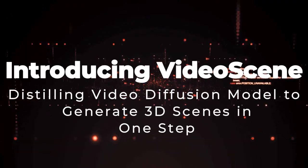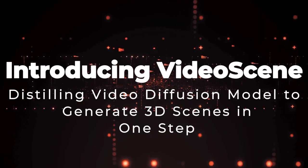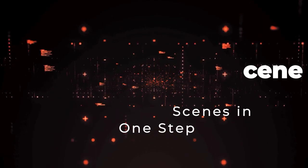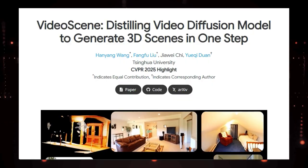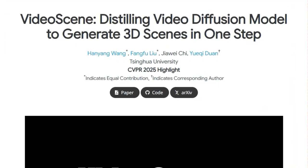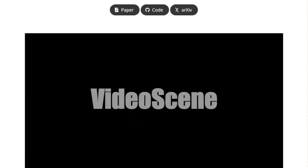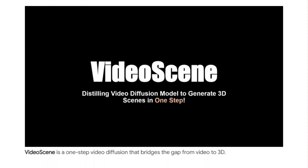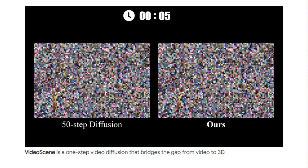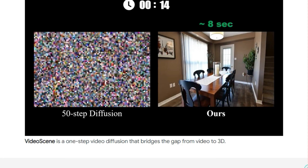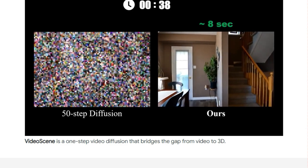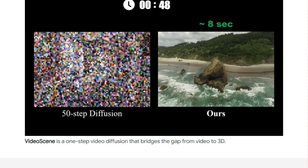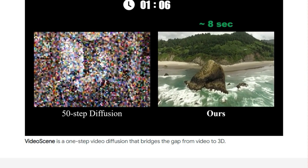Paper number 4: Introducing Video Scene — Distilling Video Diffusion Model to Generate 3D Scenes in One Step. We're diving into a really exciting paper called Video Scene, and what makes this work particularly innovative is its goal of creating 3D scenes directly from video in a single step. What sets Video Scene apart is its focus on efficiency and overcoming the limitations of previous diffusion-based methods. Traditionally, reconstructing 3D from sparse views or even videos can be slow and might produce inconsistent results that don't quite feel like real-world geometry.